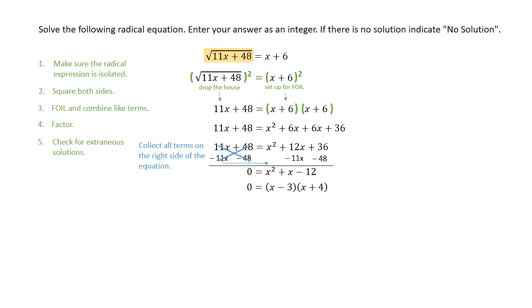Setting each of these equal to 0 and pulling the roots out gives us x is equal to 3 and x is equal to negative 4. So we're going to check these, because we did square the equation.